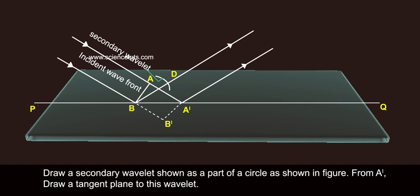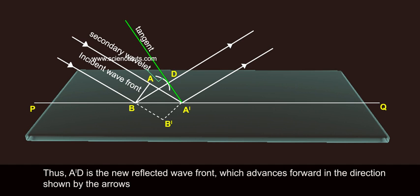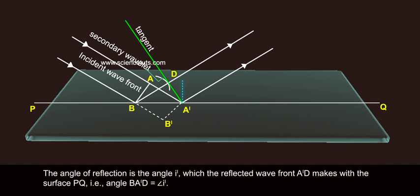From A', draw a tangent plane to this wavelet. Thus, A'D is the new reflected wave front which advances forward in the direction shown by the arrows.